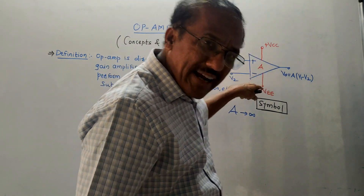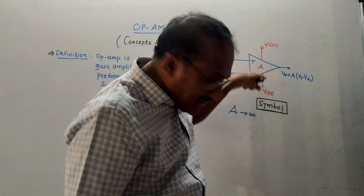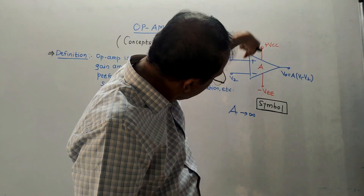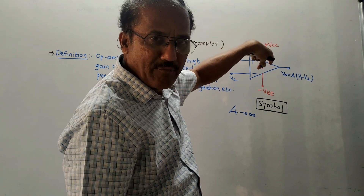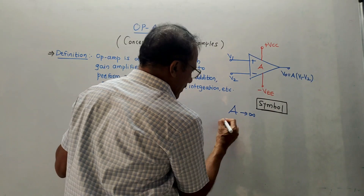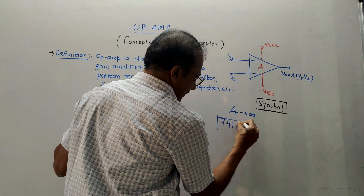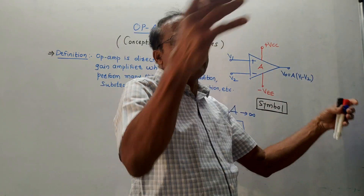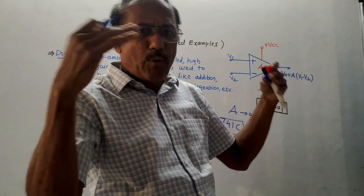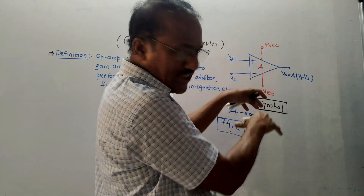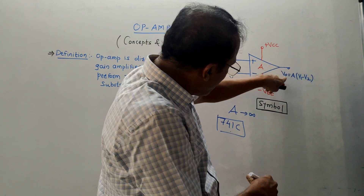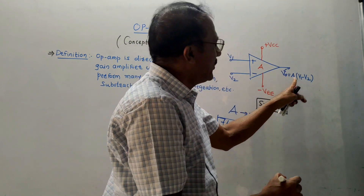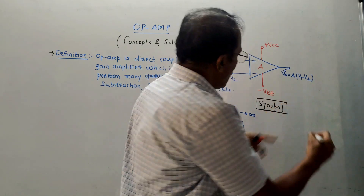Plus VCC and minus VEE are the plus and minus supply voltages needed to drive the operational amplifier. This is an IC; one of the ICs is 741C. Now, inside the Op-Amp there are different transistors connected with each other in a proper way. The output voltage of Op-Amp is denoted by V0 and it is given by gain into V1 minus V2.